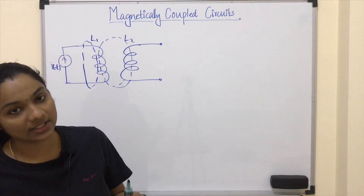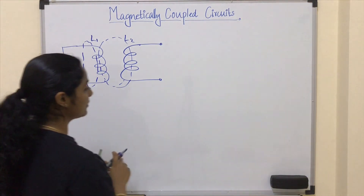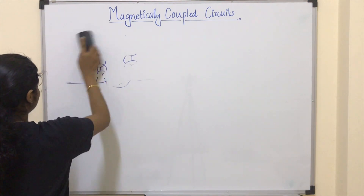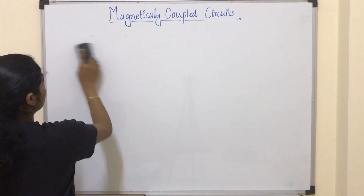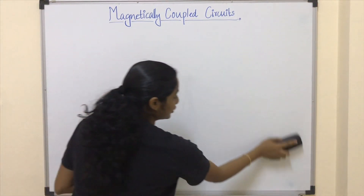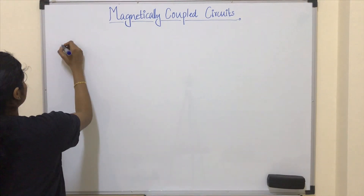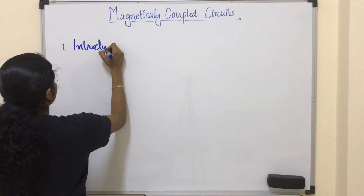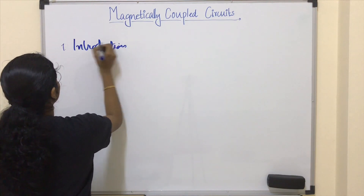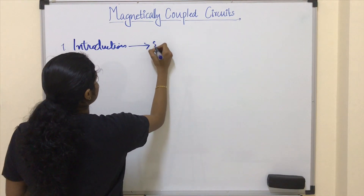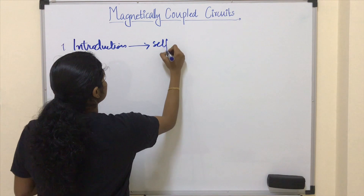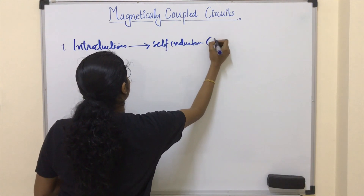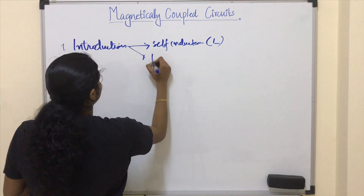Magnetic coupling doesn't require any physical connection between the circuits. This magnetically coupled circuit topic can be divided into different sections. The first part is the introduction, where we will discuss self inductance L and mutual inductance.